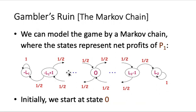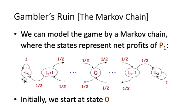We can model this game by the following Markov chain, where the states represent the net profit of player 1. Initially, player 1 has a net profit of zero dollars. As time goes by, he may win or lose. The maximum he can win is L2, because then player 2 goes bankrupt. Similarly, the minimum is minus L1, because then player 1 goes bankrupt. So the states range from minus L1 up to L2, and the transition probability between states is: normally, there is a half chance of going forward and a half chance of going backward.